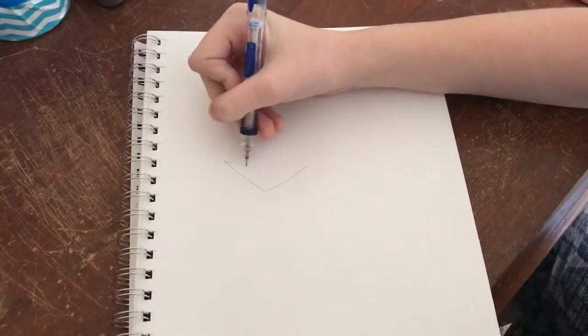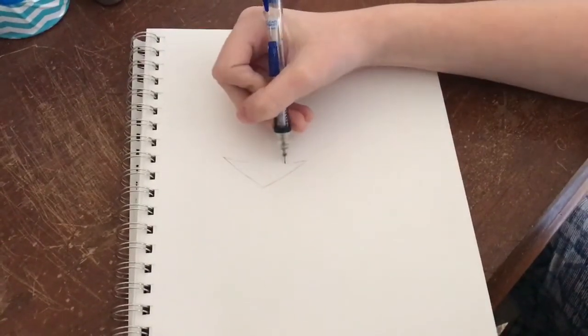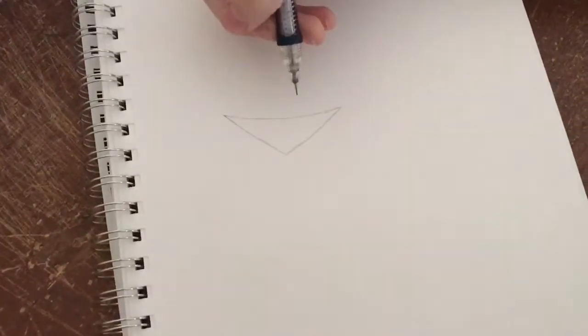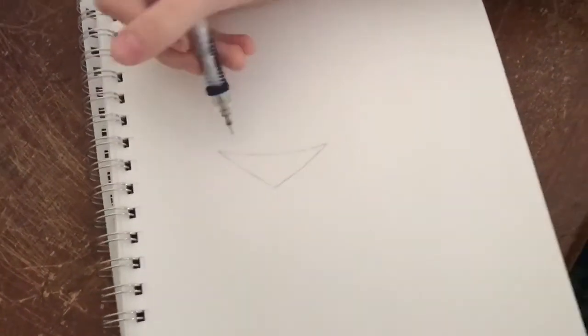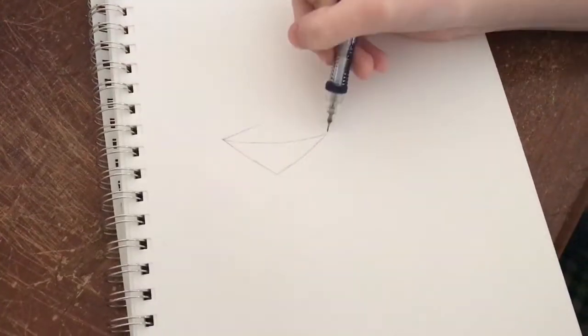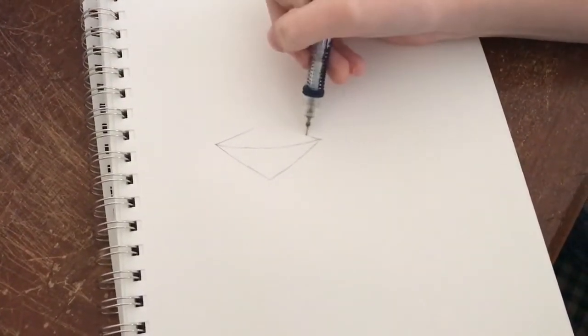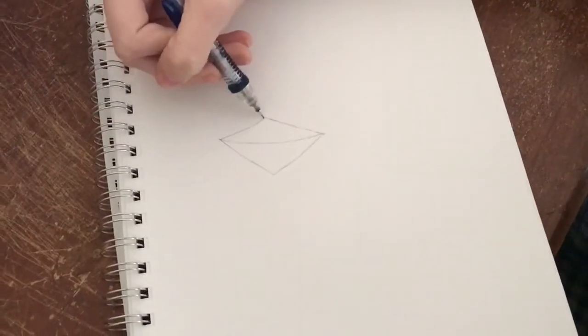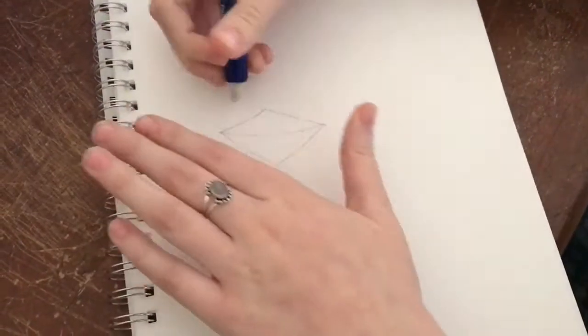Then you just do a slight curved line to connect those. Just draw the dimensions of the gem. See it's slightly curved. Then finish the top with another upside down V. You can make mistakes. You just erase them.